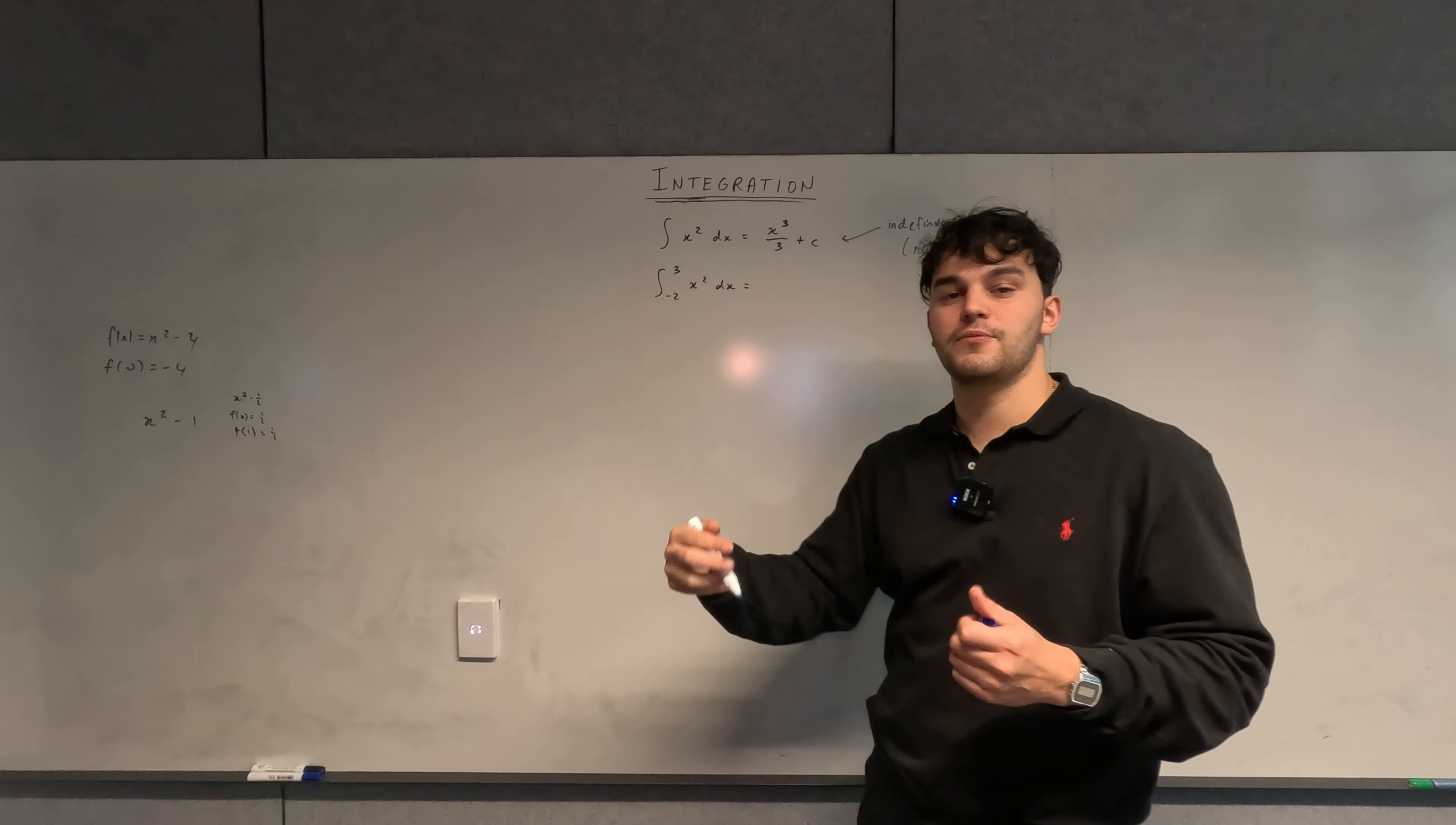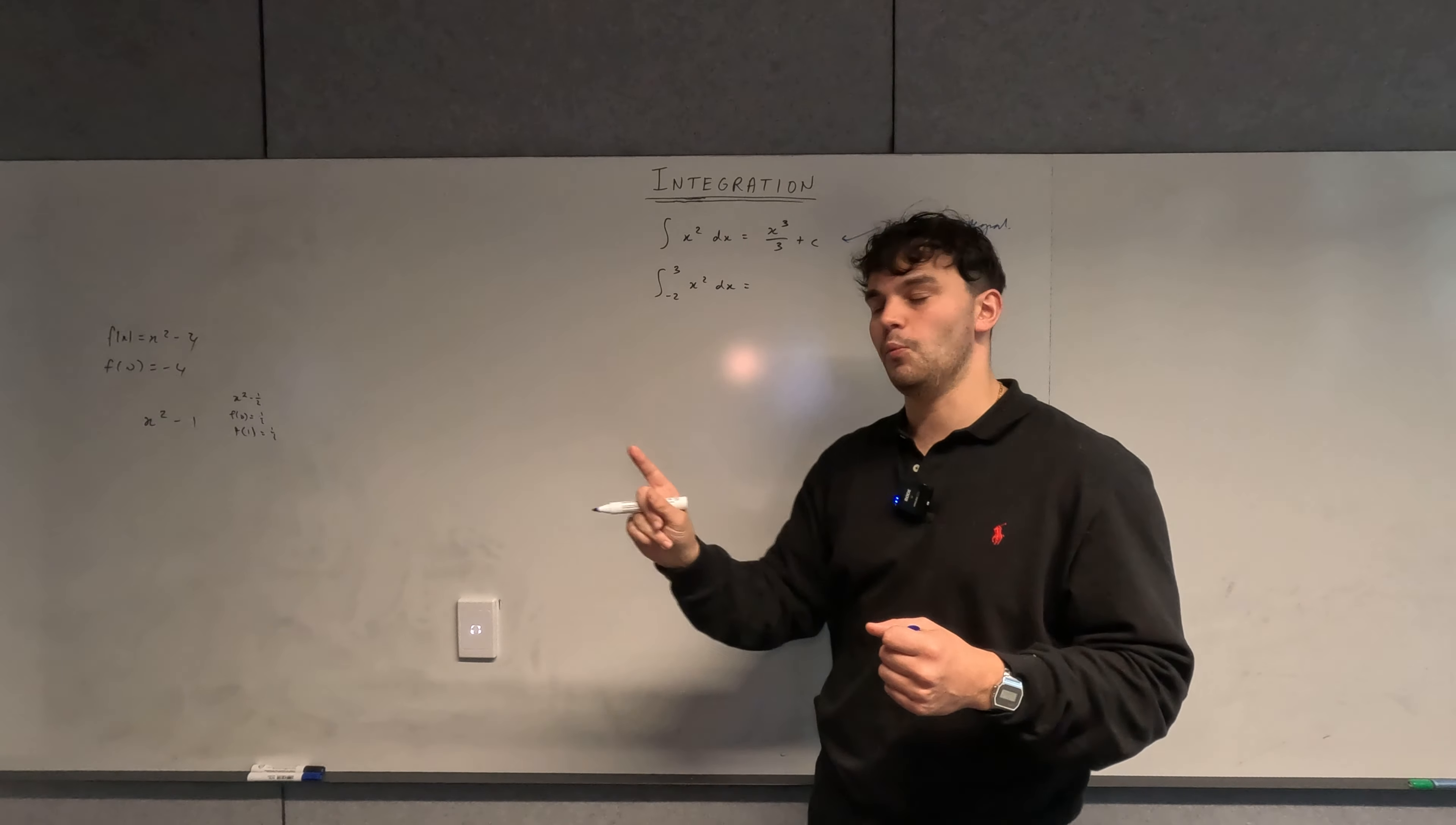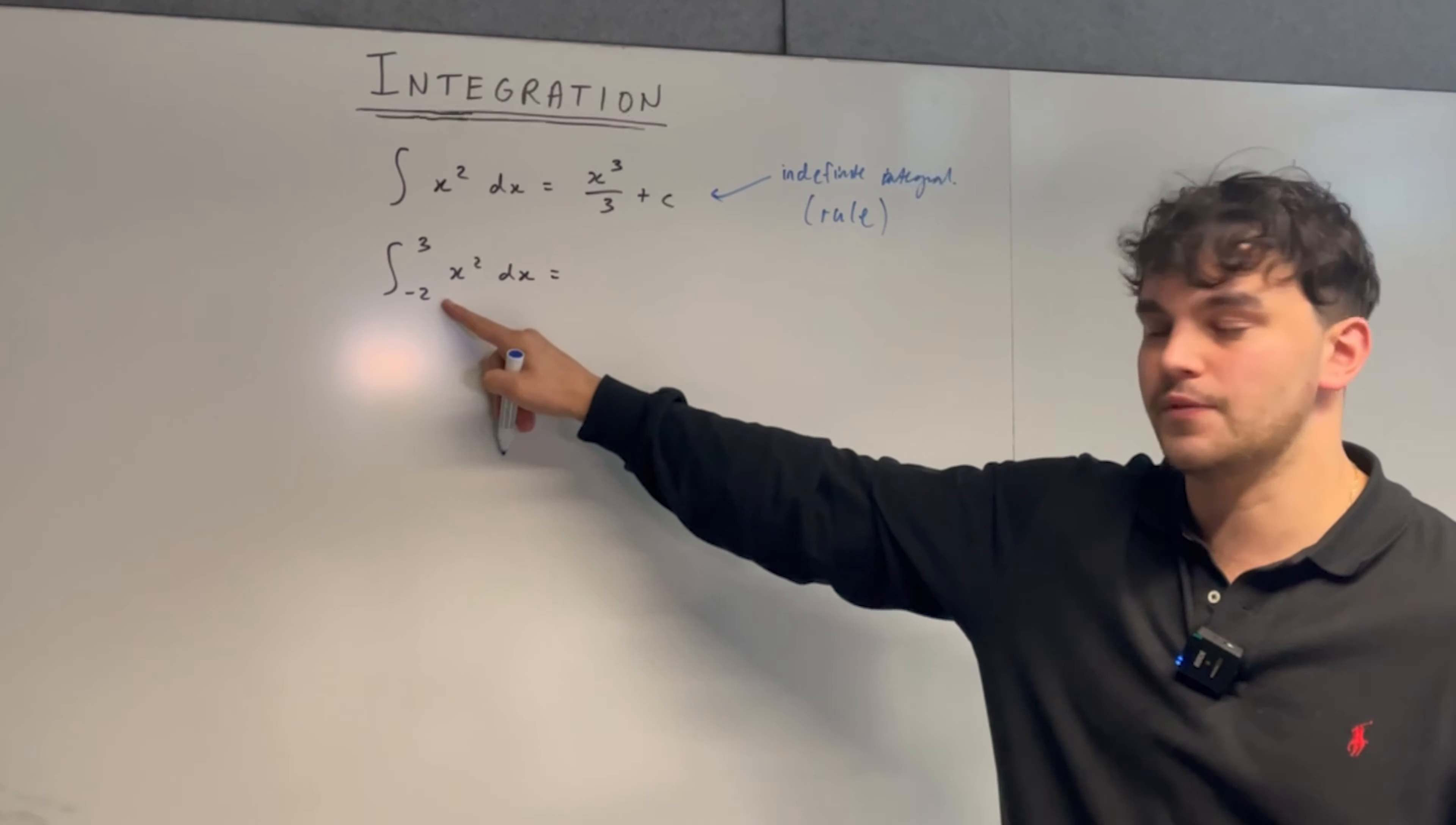Now a definite integral comes from the fact that we substitute in numbers, but it's different to differentiation because for integration we actually substitute in two values. For differentiation we only substitute in one. Now how do we deal with that? We always substitute in the top number and then minus the substitution of the bottom number.